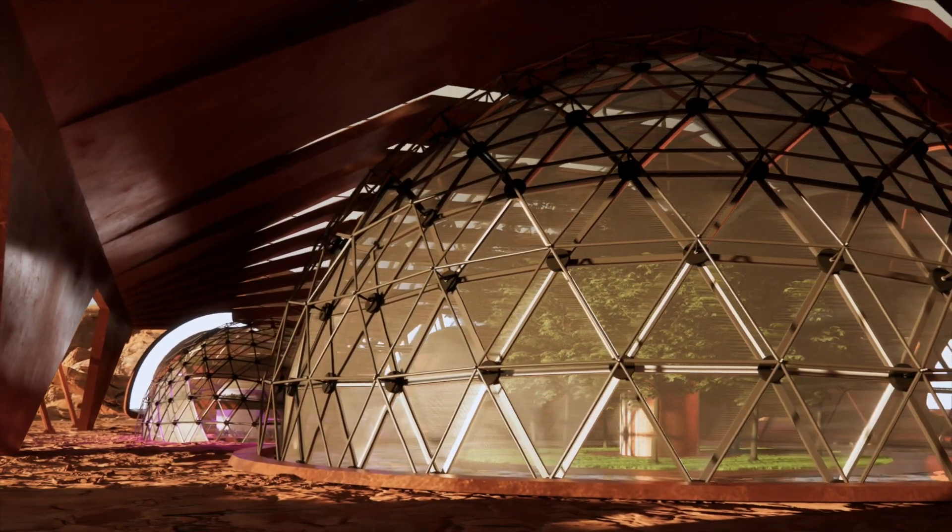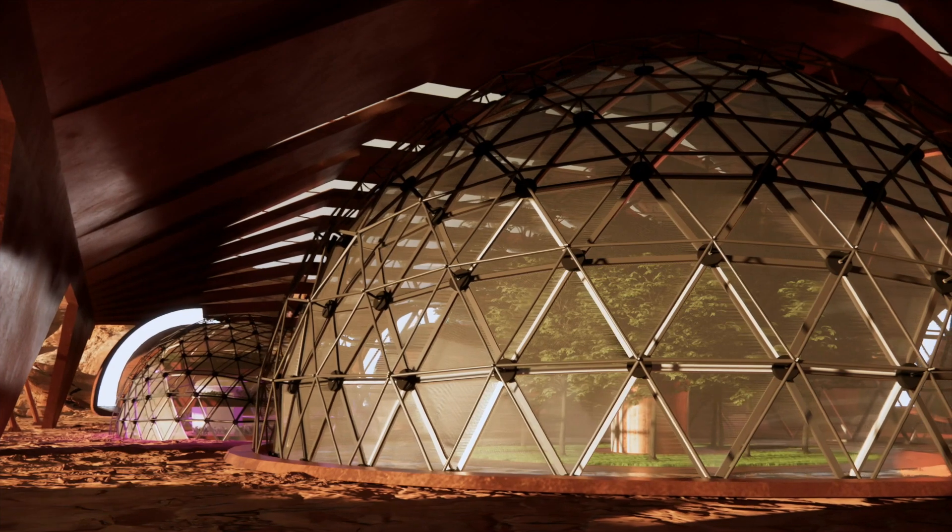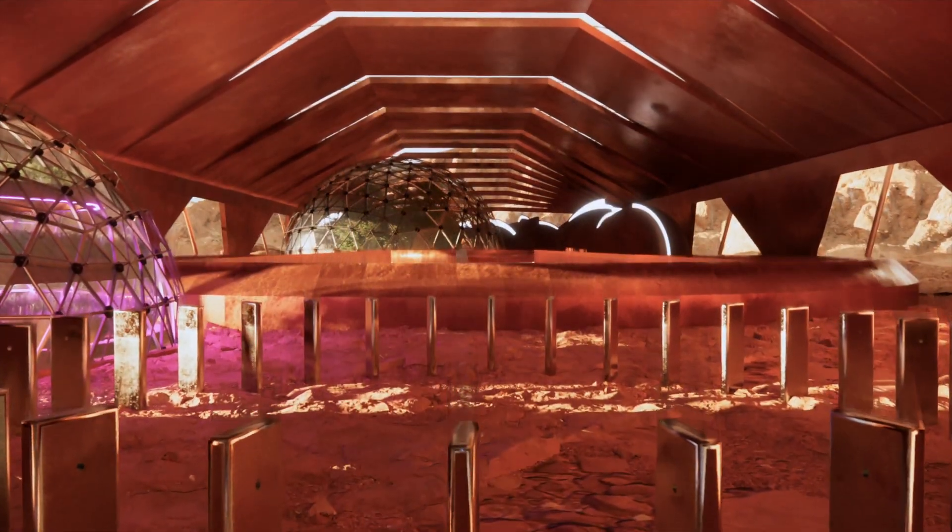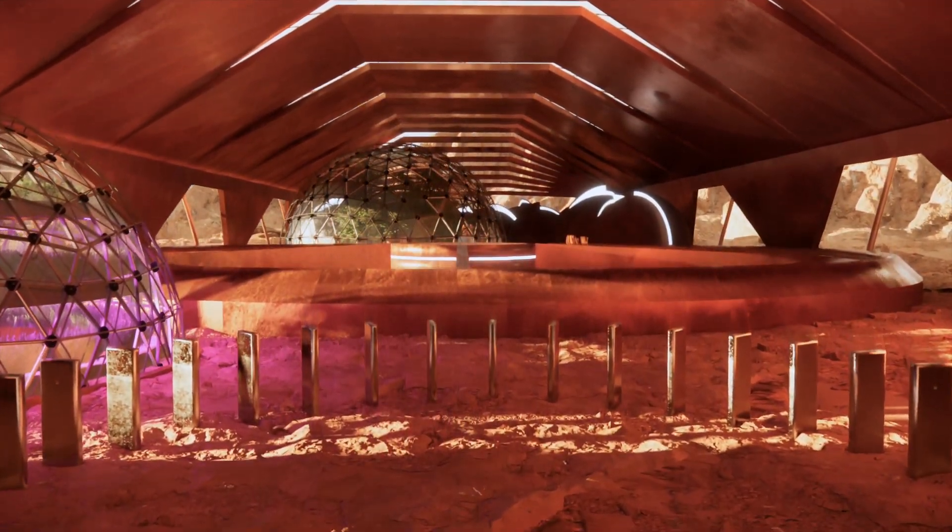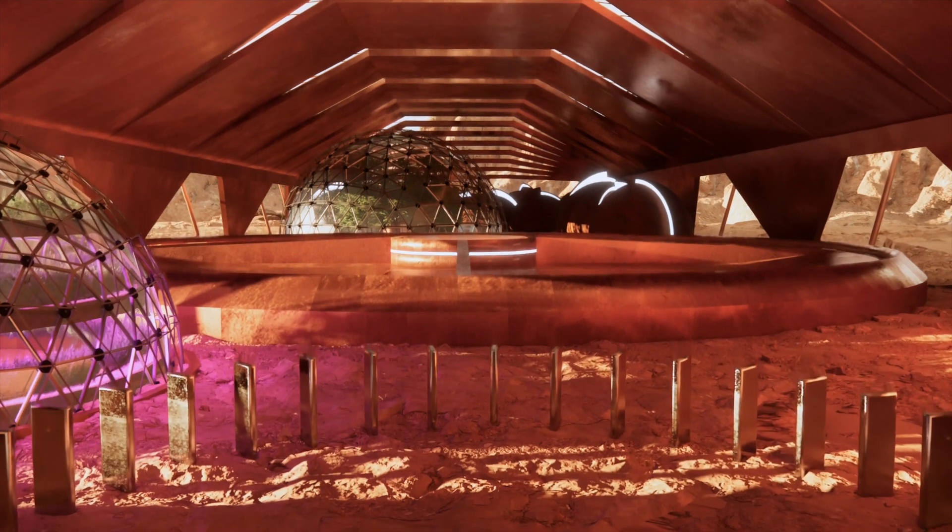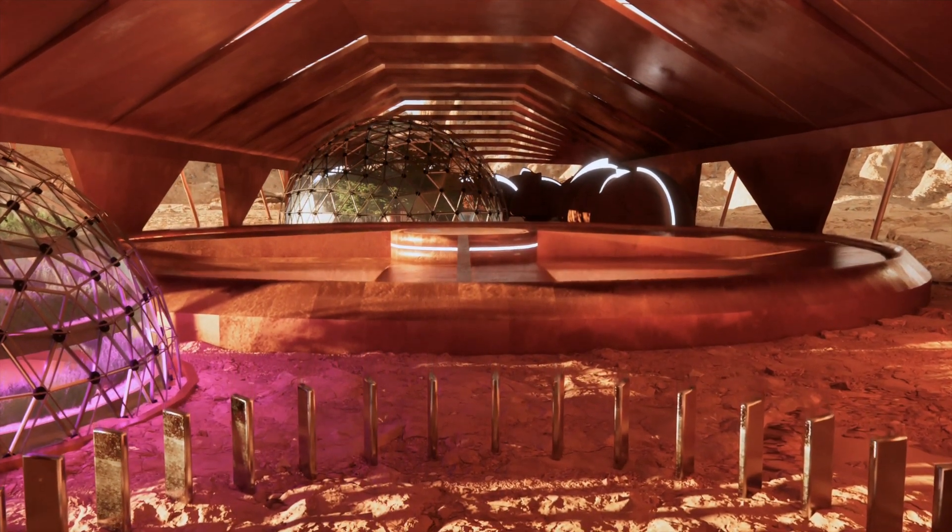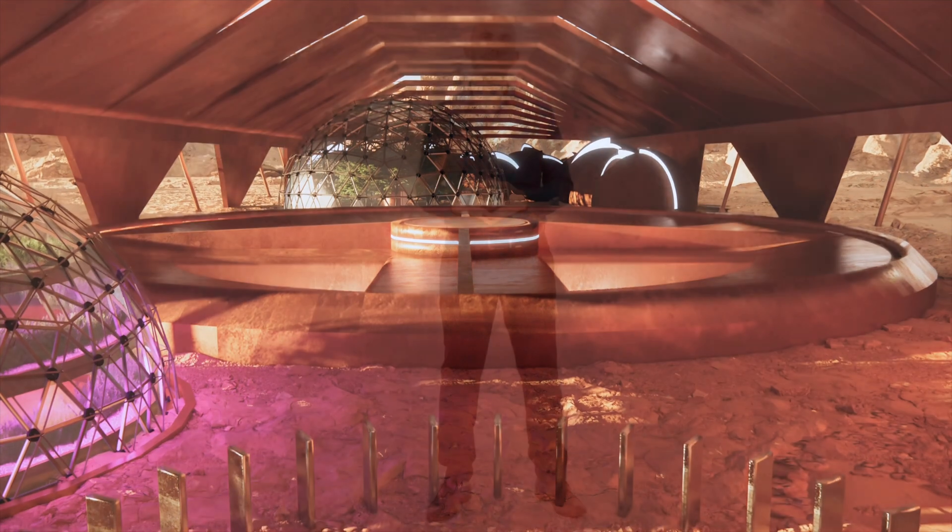One of the solutions is to build 3D printed structures or geodesic domes on the surface of Mars and then have large canopies protecting those buildings from radiation or from potential impact from micrometeorites. This is an interesting solution, but it's not very scalable because it would require a lot of materials to build those structures.